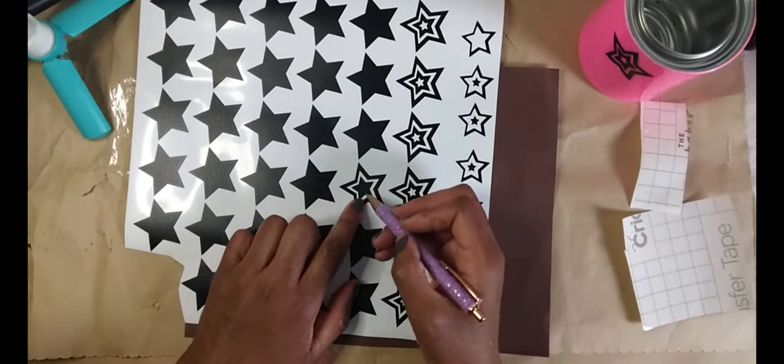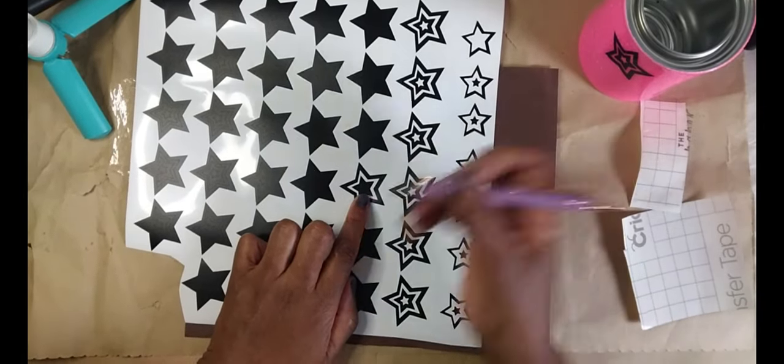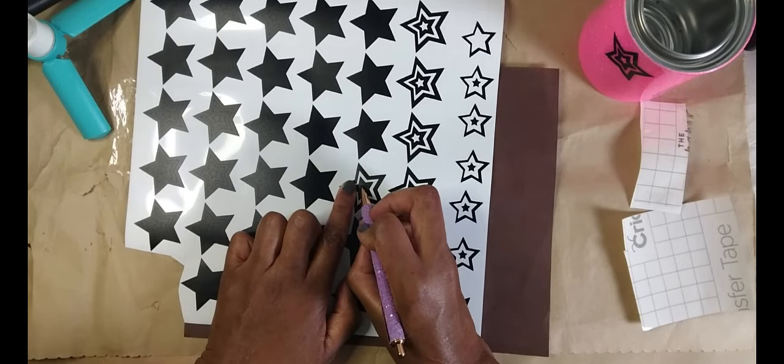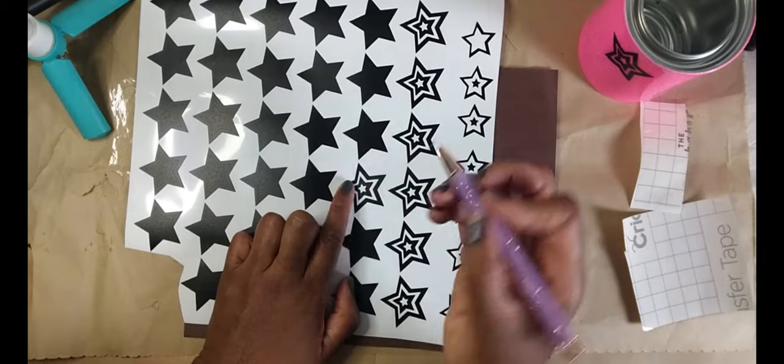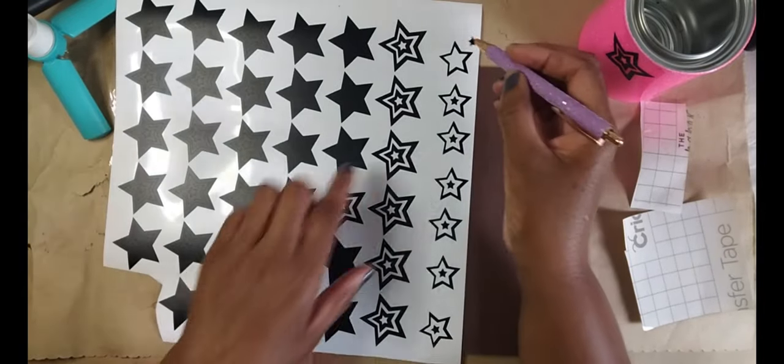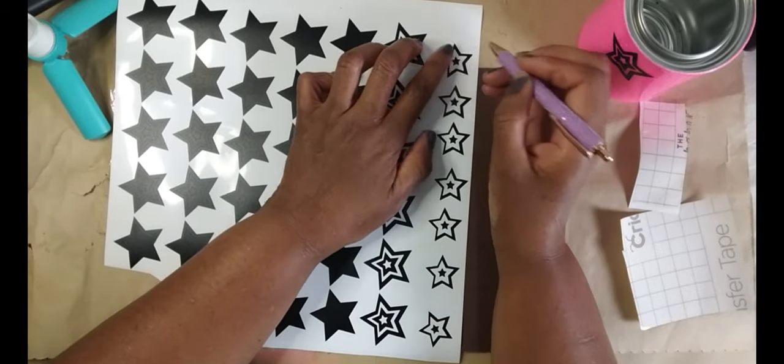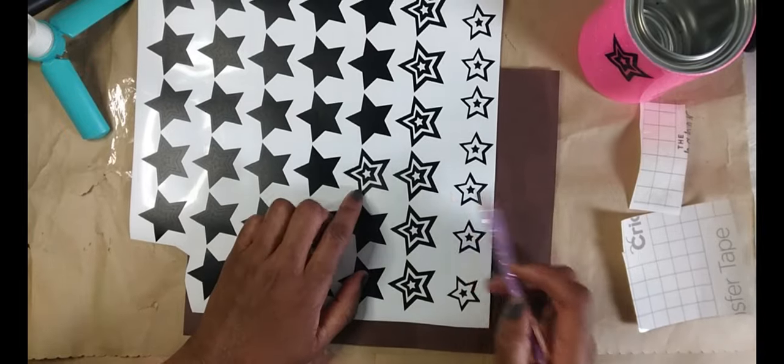Now I'm going to go and get the next part out, which is the center part, which is the smaller star. So I'm going to go in and just pick it up like that and there's that right there and I'm just going to place it here in the center. Okay, so then what you're left with is this design here.